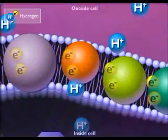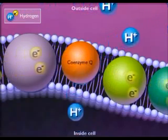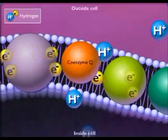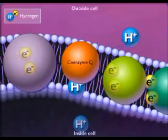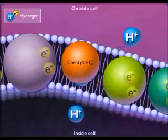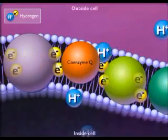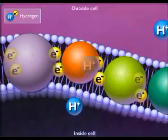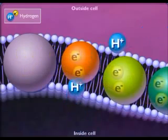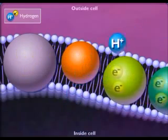Some of the electron carriers, such as coenzyme Q, accept a proton from the inside of the cell membrane as they accept electrons. The proton is then transported through the membrane as electrons move down the chain. This increases the proton gradient across the membrane and enhances the proton motive force.